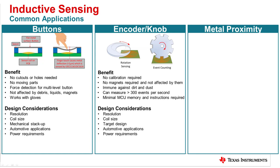The benefits behind using an LDC approach for encoder applications is not requiring calibration, not needing magnets and not being affected by them, the ability to measure over 300 events per second, and requiring minimal microcontroller memory. The design considerations for this application are the same as button application, but with more focus on the target design.